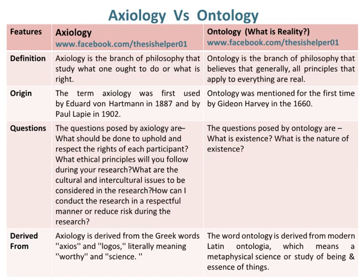Axiology is derived from the Greek words axios and logos, literally meaning worthy and science. Whereas, the word ontology is derived from modern Latin ontologia, which means a metaphysical science or study of being and essence of things.